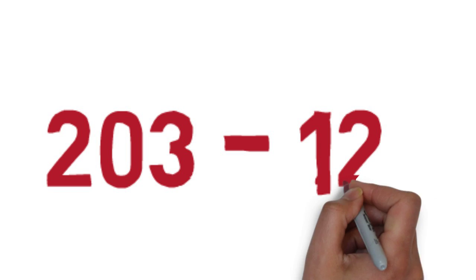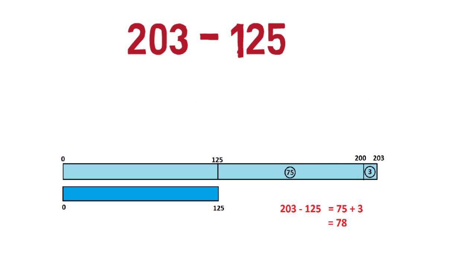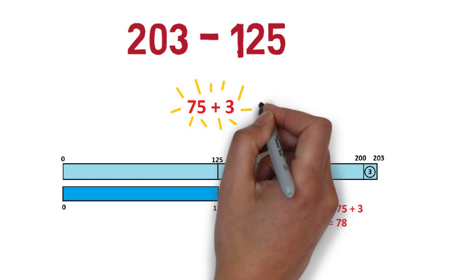And maybe you can see how to do this one. 203 take away 125. Put two rulers side by side, and see that 75 inches and 3 inches gets from 125 to 203. 203 take away 125 must be 75 and 3. That's 78.